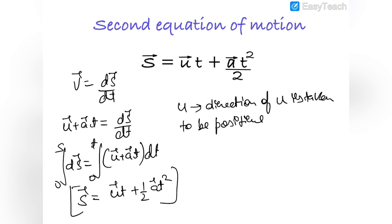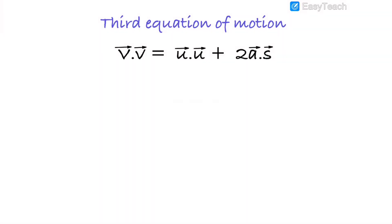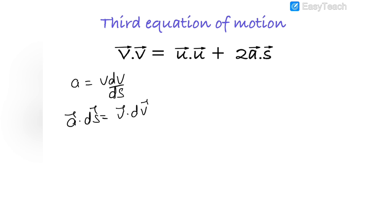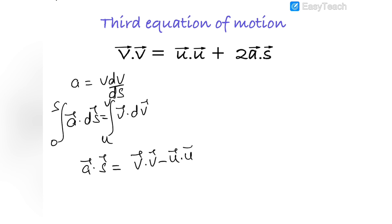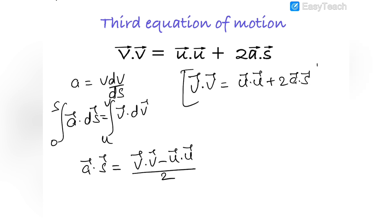For the third equation of motion, the scalar form is v² = u² + 2as. The vector form is derived from a·ds = v·dv. Integrating with limits u to v for velocity and 0 to s for displacement gives a·s = (v·v - u·u)/2, so v·v = u·u + 2a·s, which is the third equation of motion.